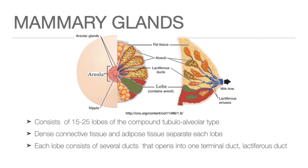Each lobe has its own excretory duct, which opens independently in the nipple. The areola is a darkly pigmented area around the nipple. The widening of the lactiferous duct in this area is called the lactiferous sinus.